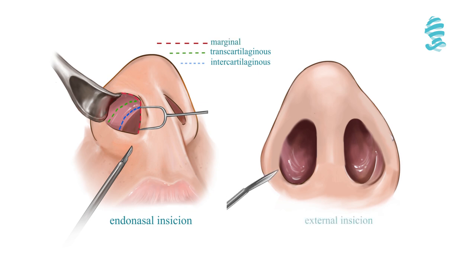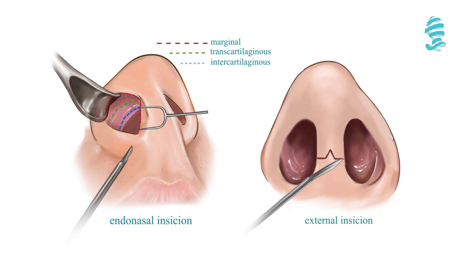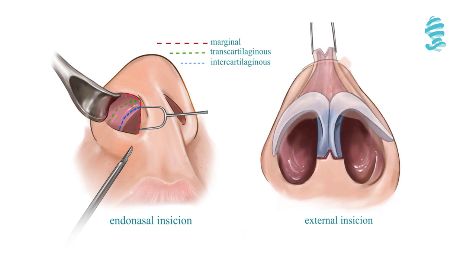The external approach is a combination of an inverted V-shaped cut placed on the columella and marginal cuts that pass inside the nose.